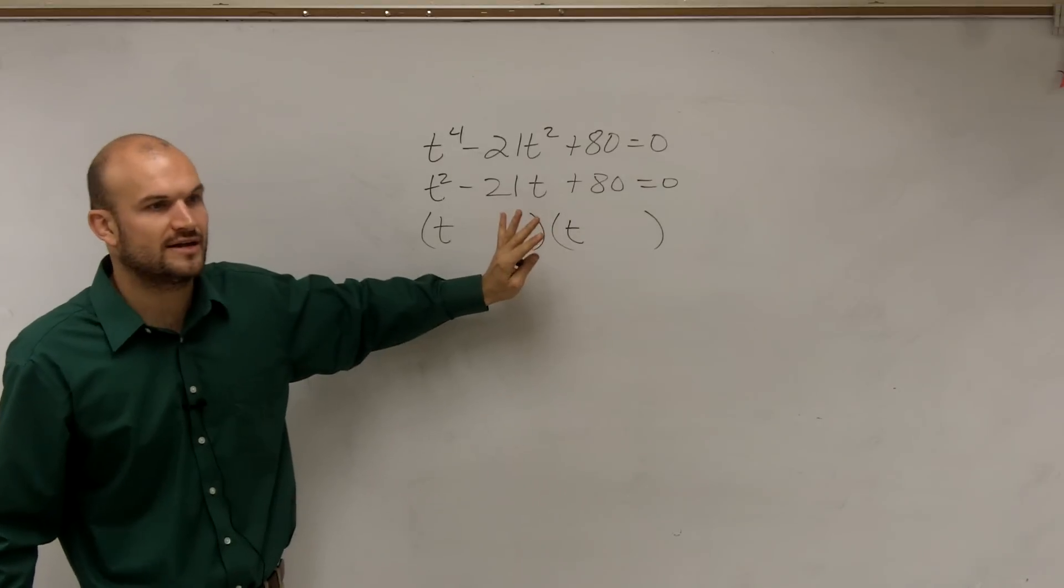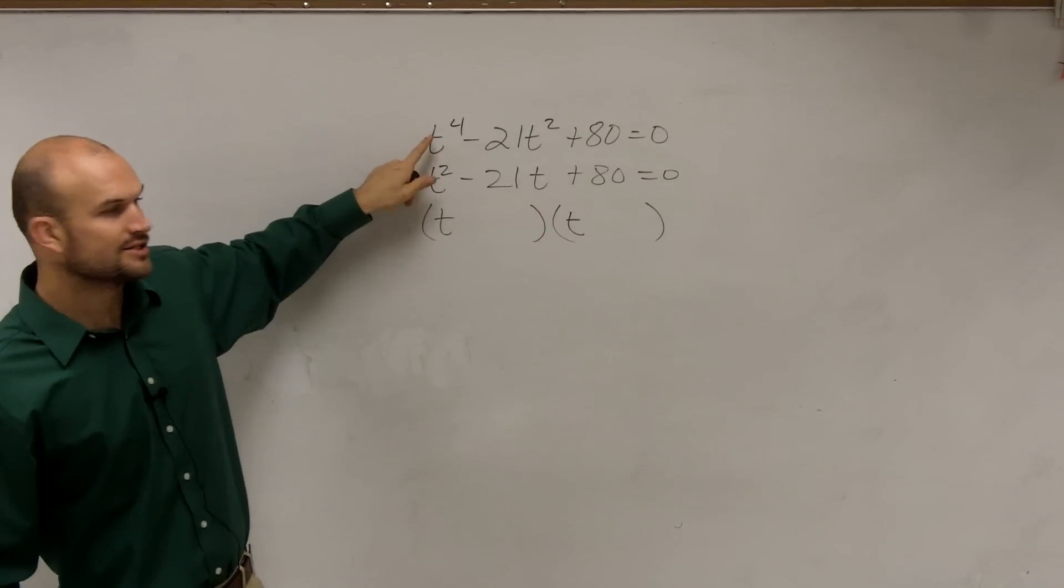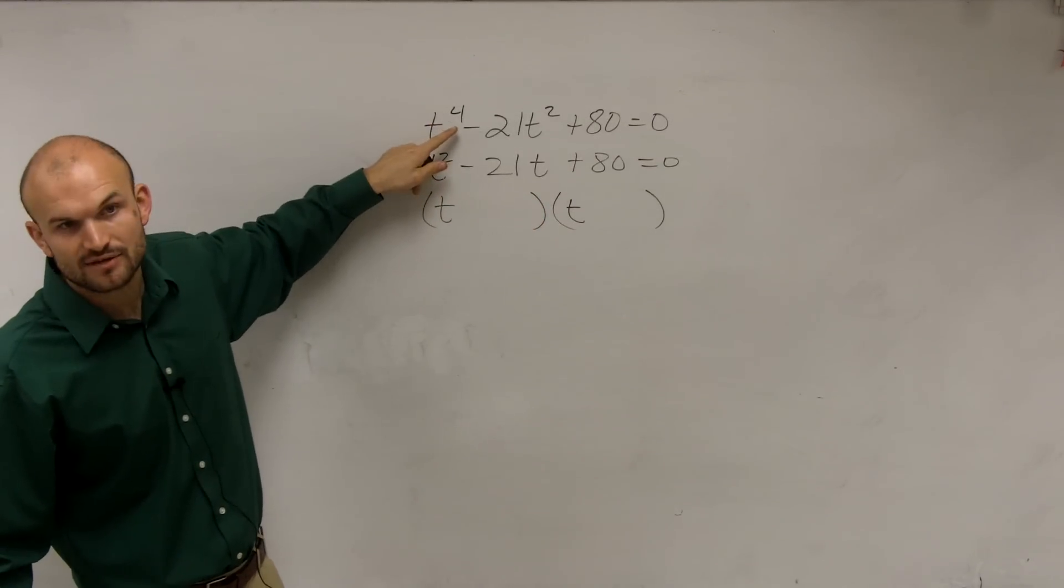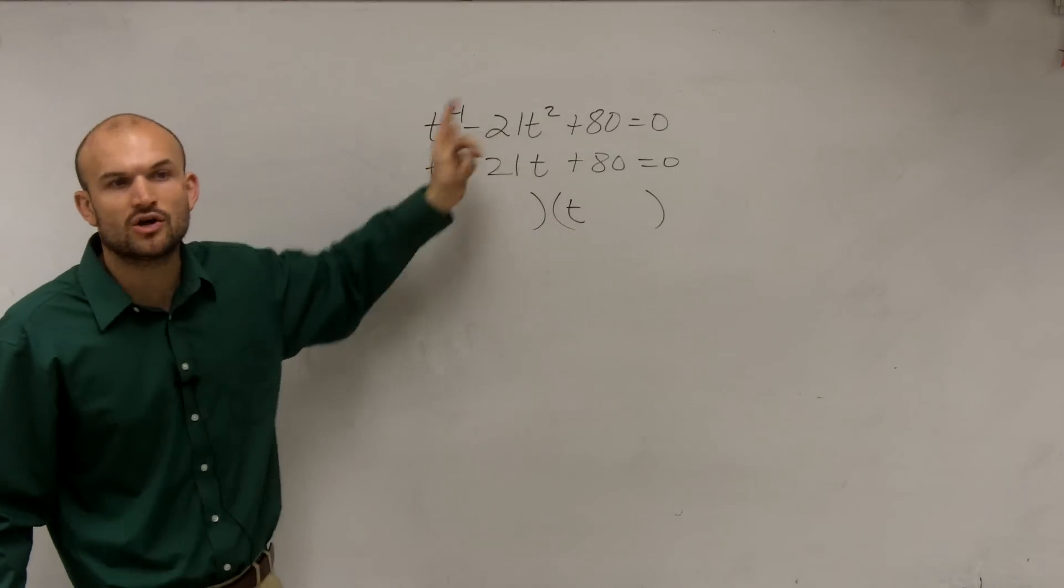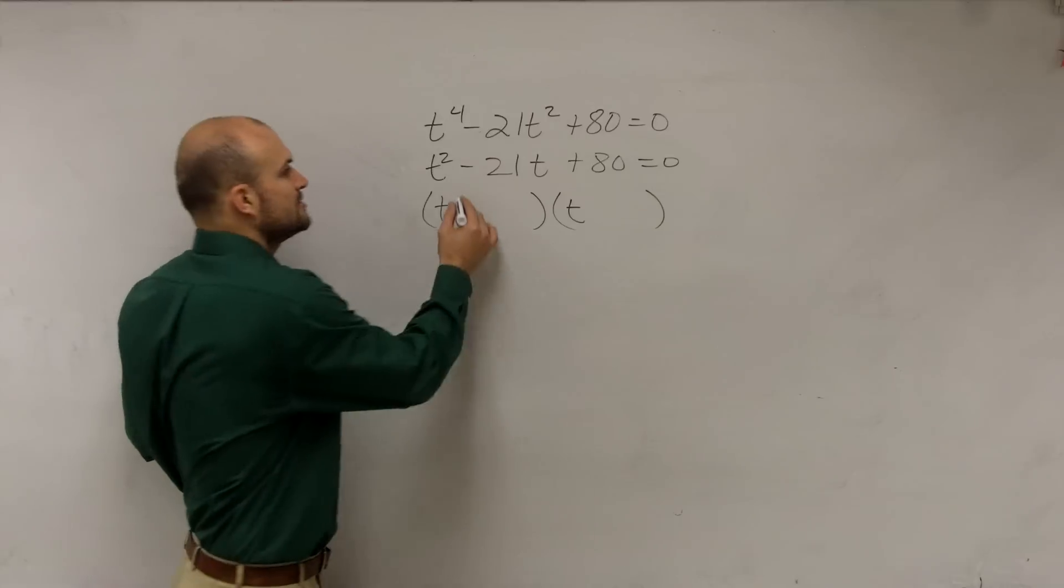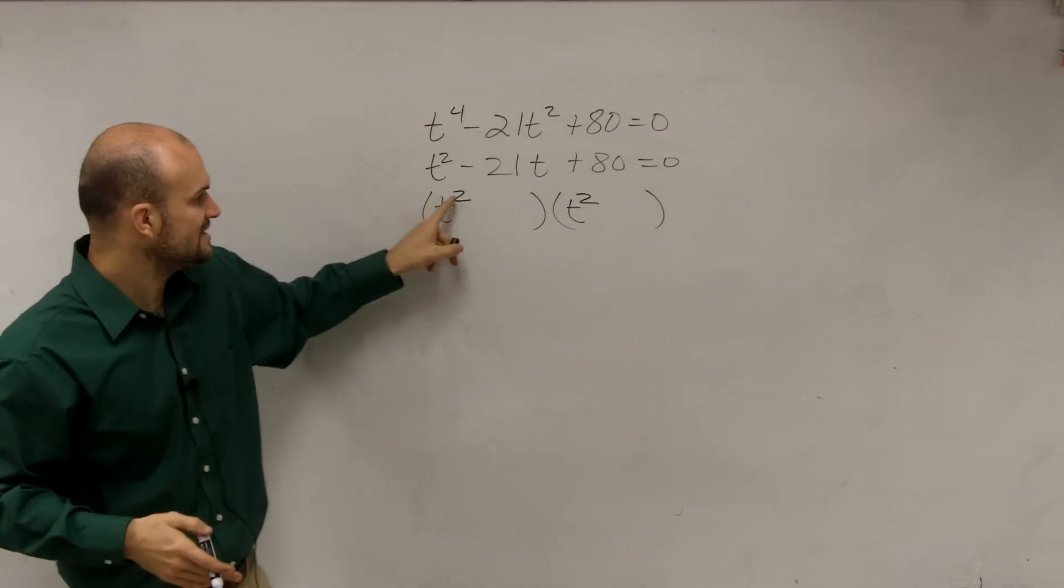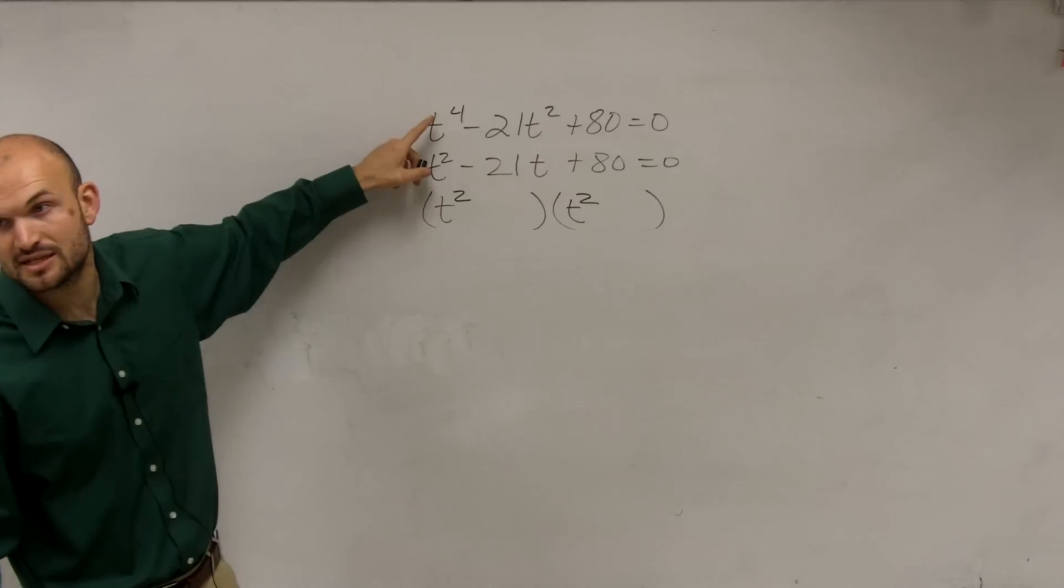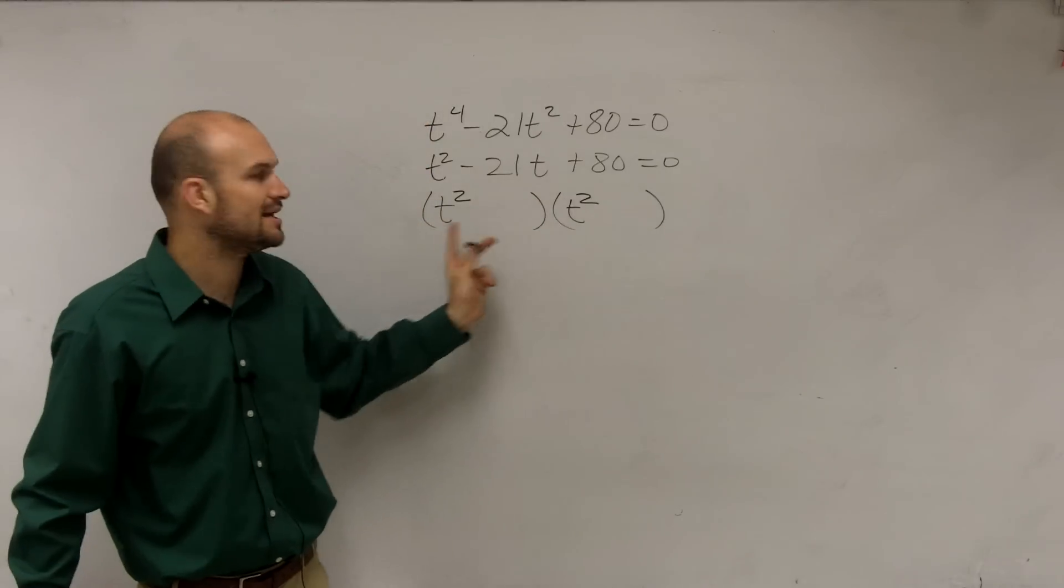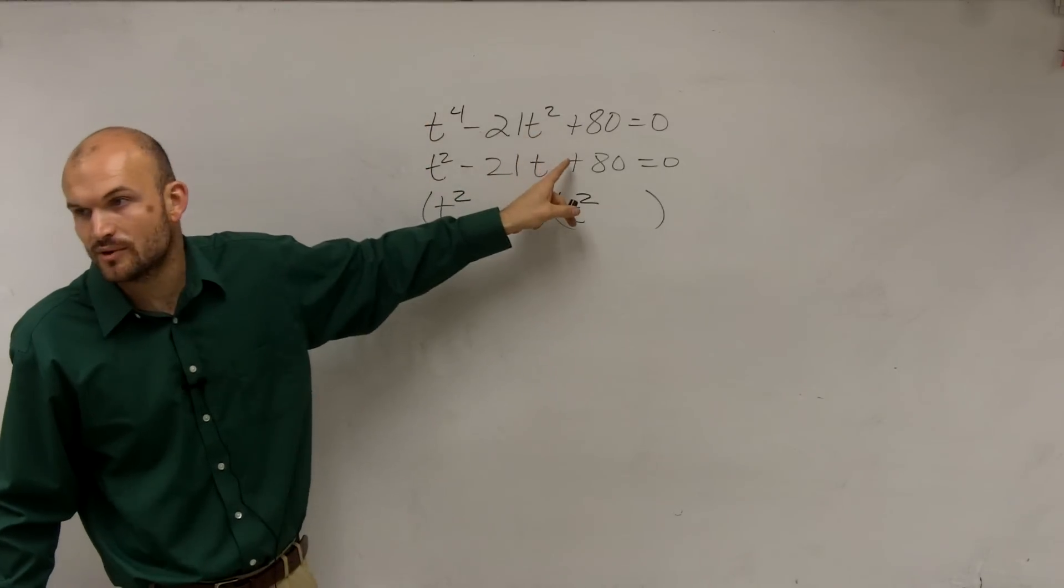And we're going to learn about how to factor this next. But now what I need to do is, if I want to do the t to the fourth, that just means my first two terms need to multiply to give me t to the fourth. So I could have t squared times t squared, because t squared times t squared is going to give me t to the fourth. And then when I combine my like terms, I'll have t squared as a middle term.